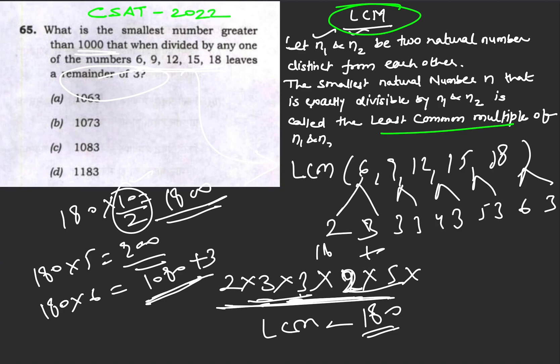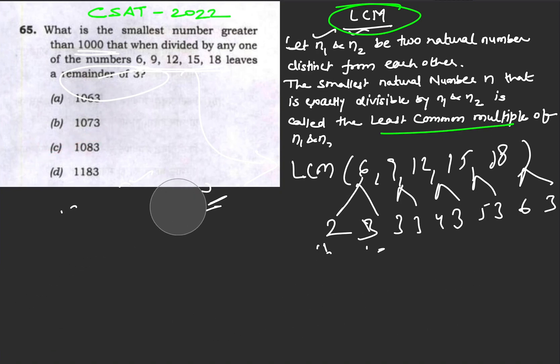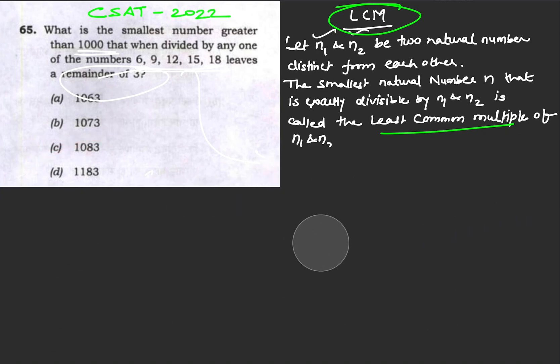This is one way of doing this question. Another way is by using the divisibility rule. For the divisibility rule of 9, we know that the sum of digits